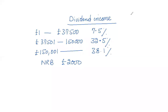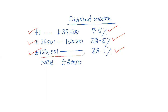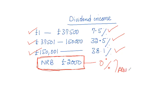As far as dividend income is concerned, the rates are as follows: if dividend falls in the basic rate band, the rate is 7.5%; if it falls in the higher rate band, the rate is 32.5%; and if it falls in the additional rate band, the rate is 38.1%. Remember, we tax non-saving income first, then saving income, then dividend income. The first £2,000 of dividend income is taxed at zero percent — this is called the dividend nil rate band.